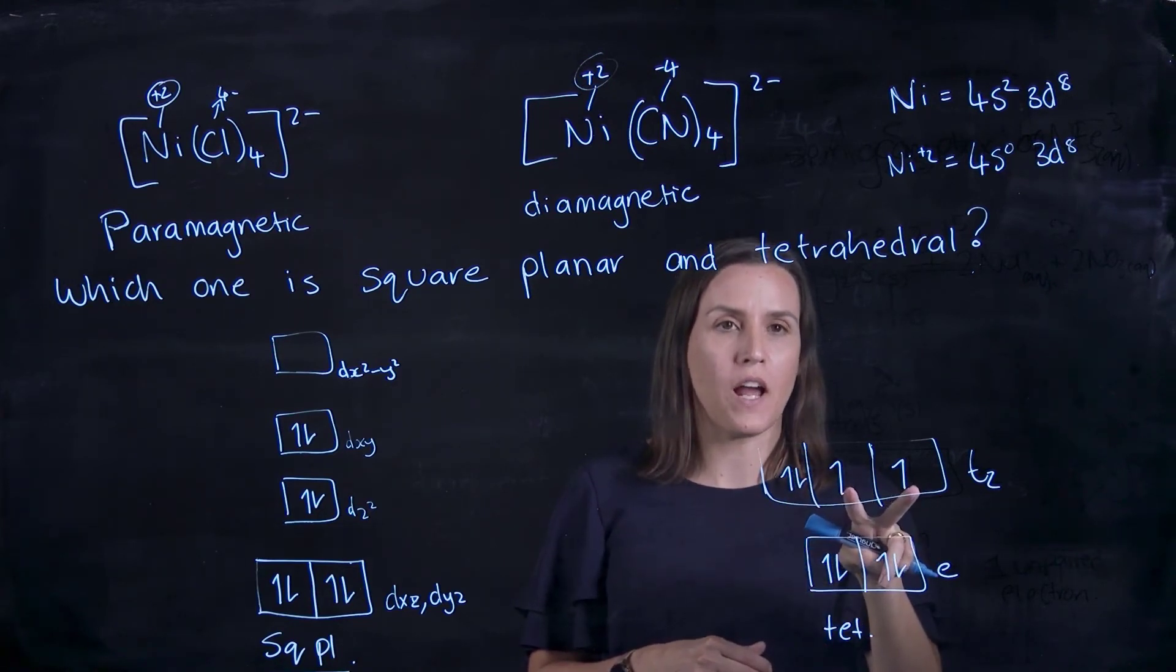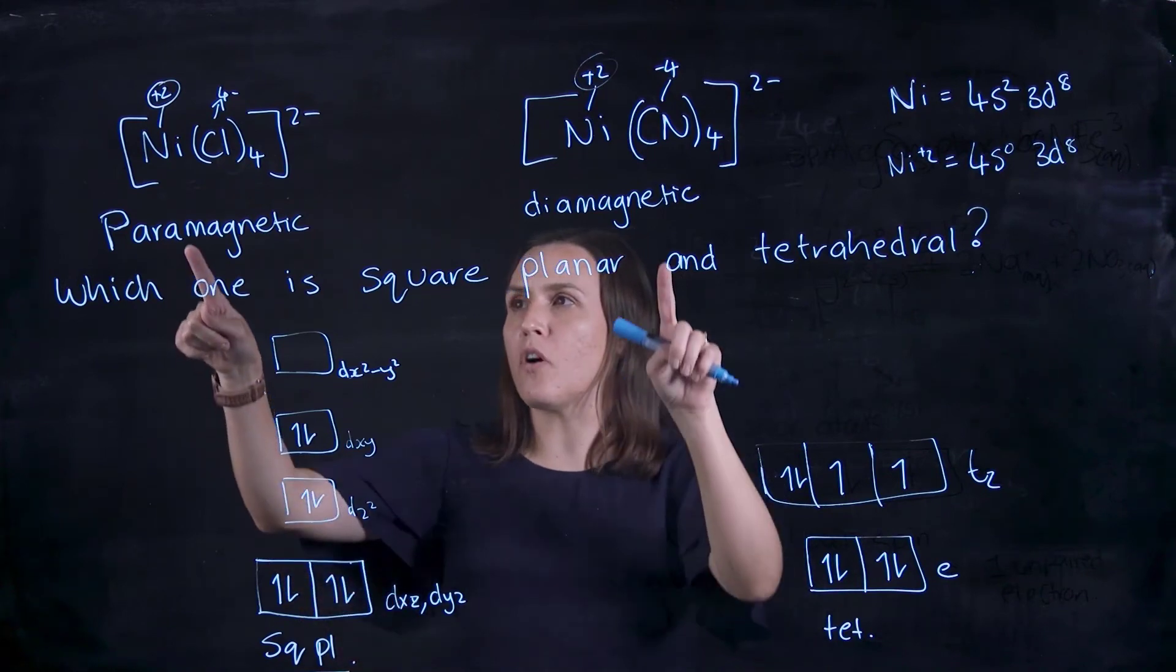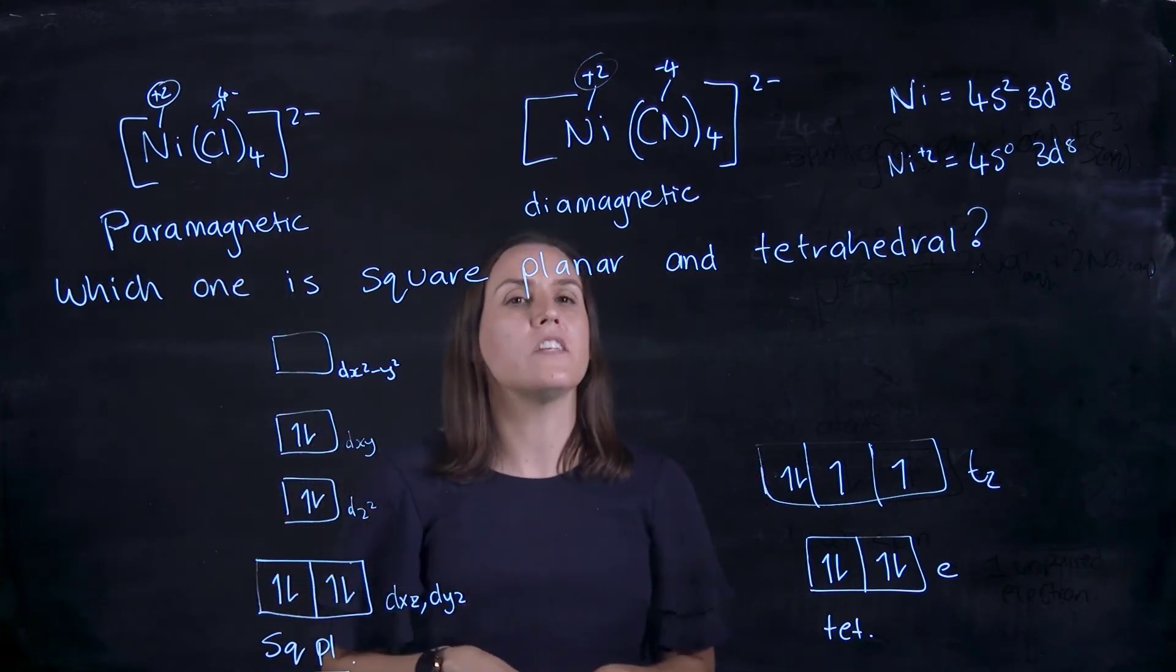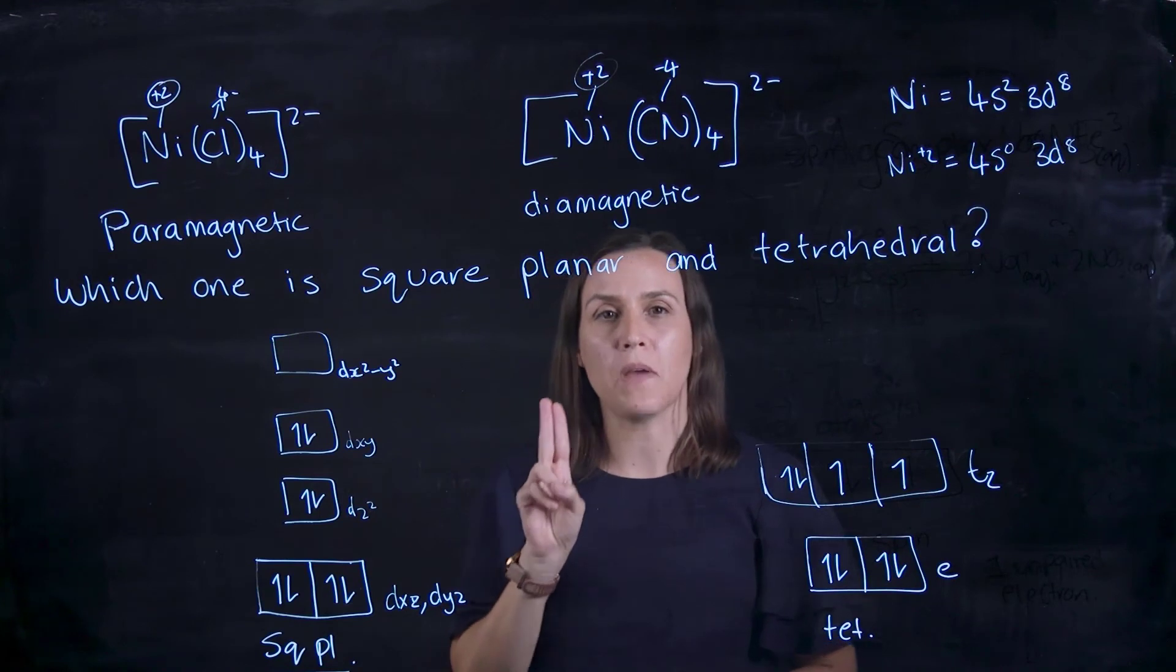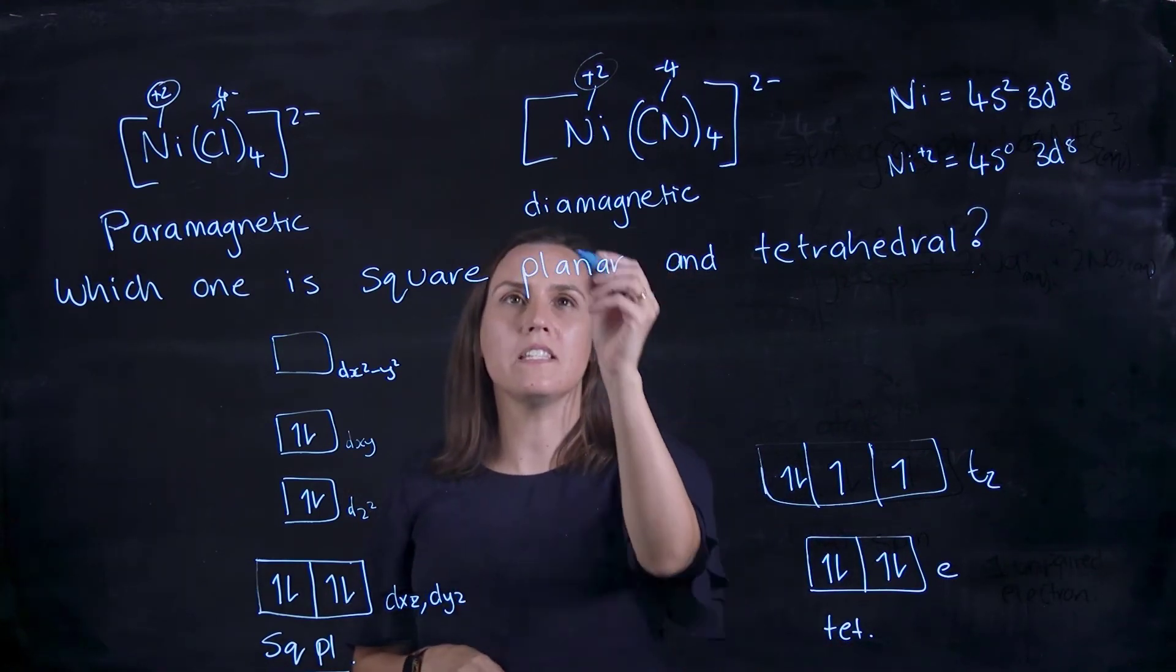So we've got 2 unpaired and here we have no unpaired. So we've got paramagnetic and diamagnetic. Diamagnetic is when they're all in pairs—there's two of them, they're all paired.